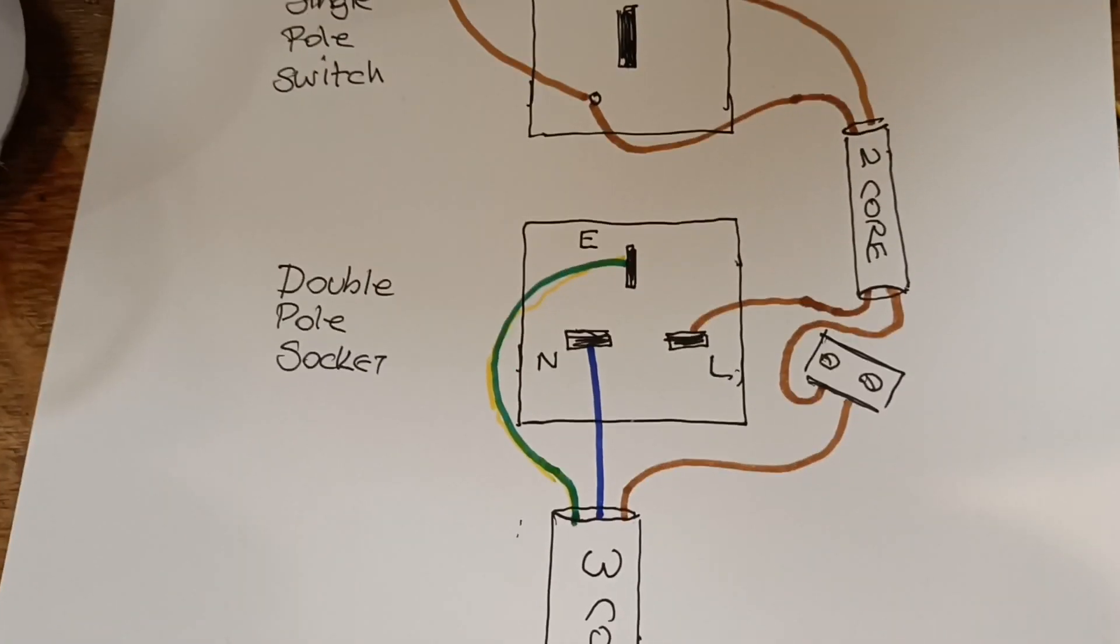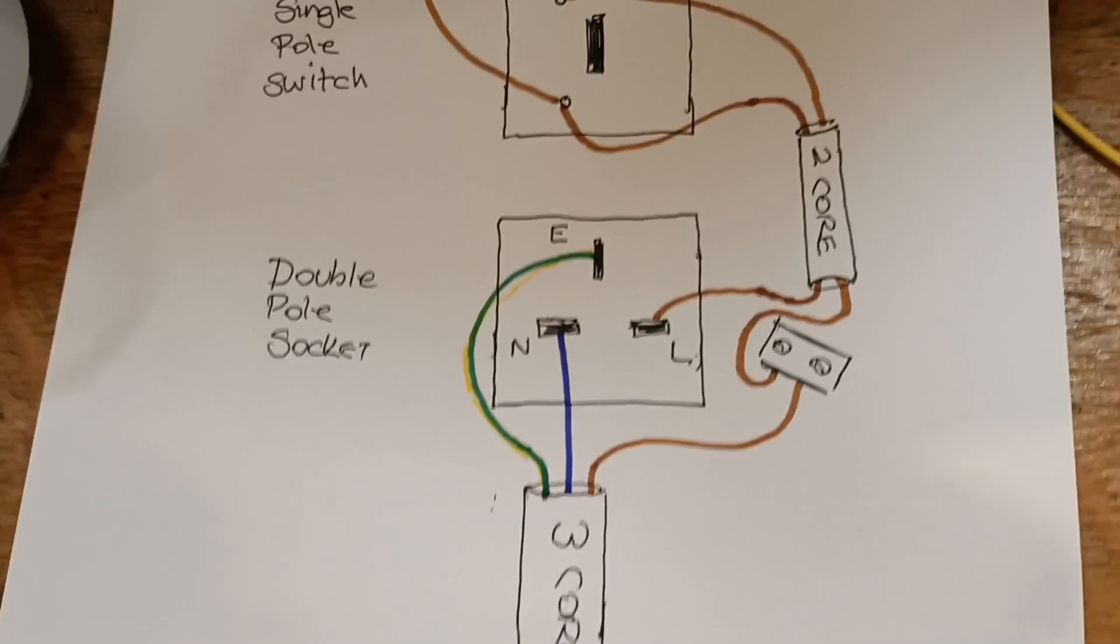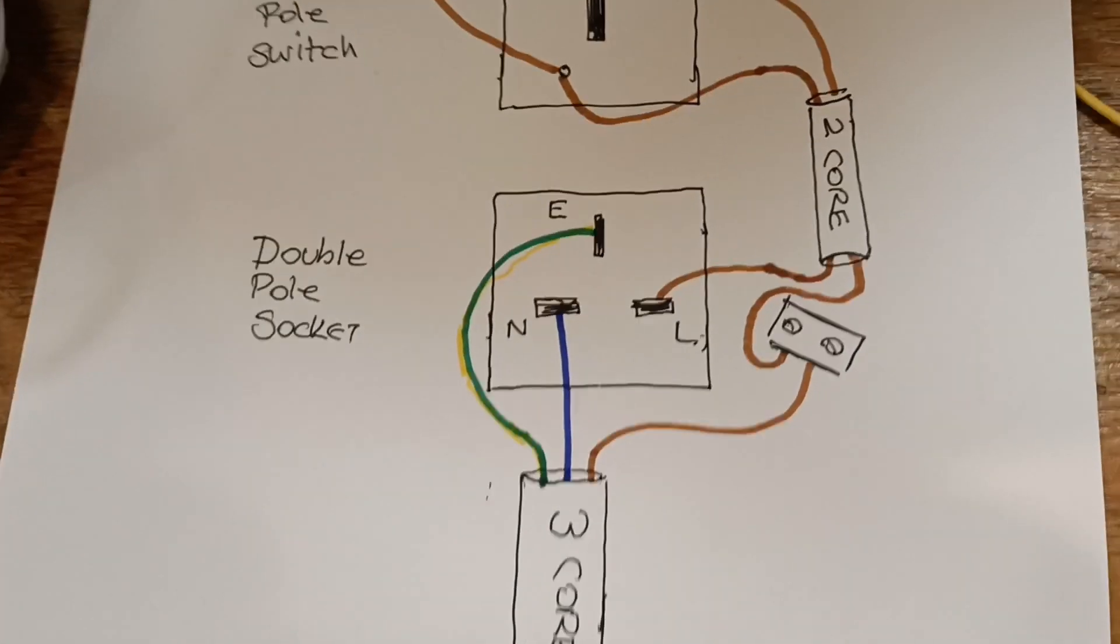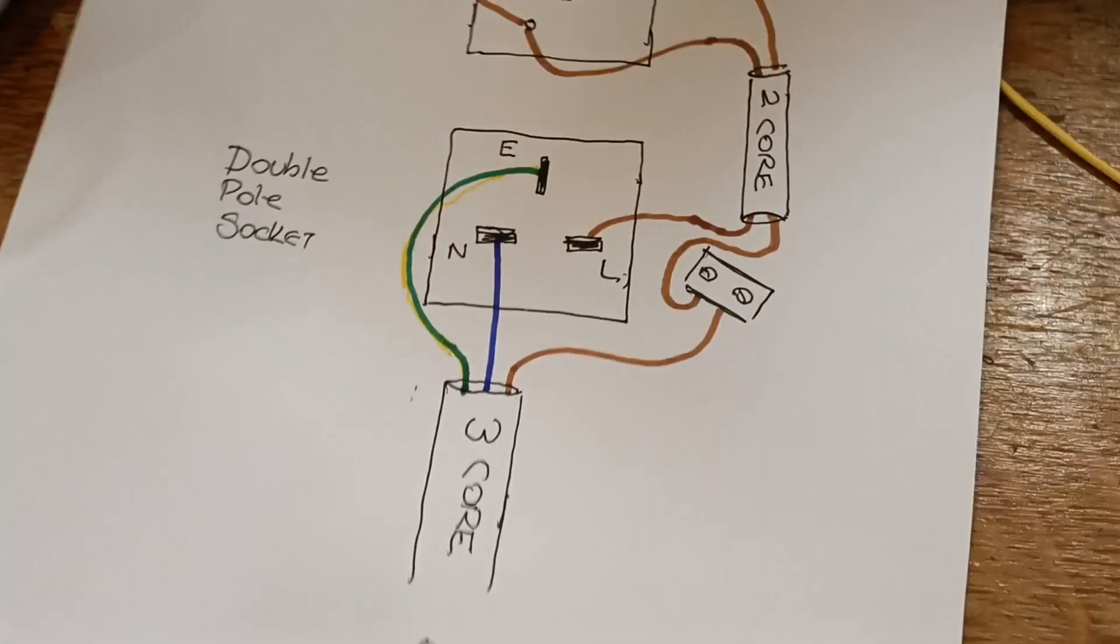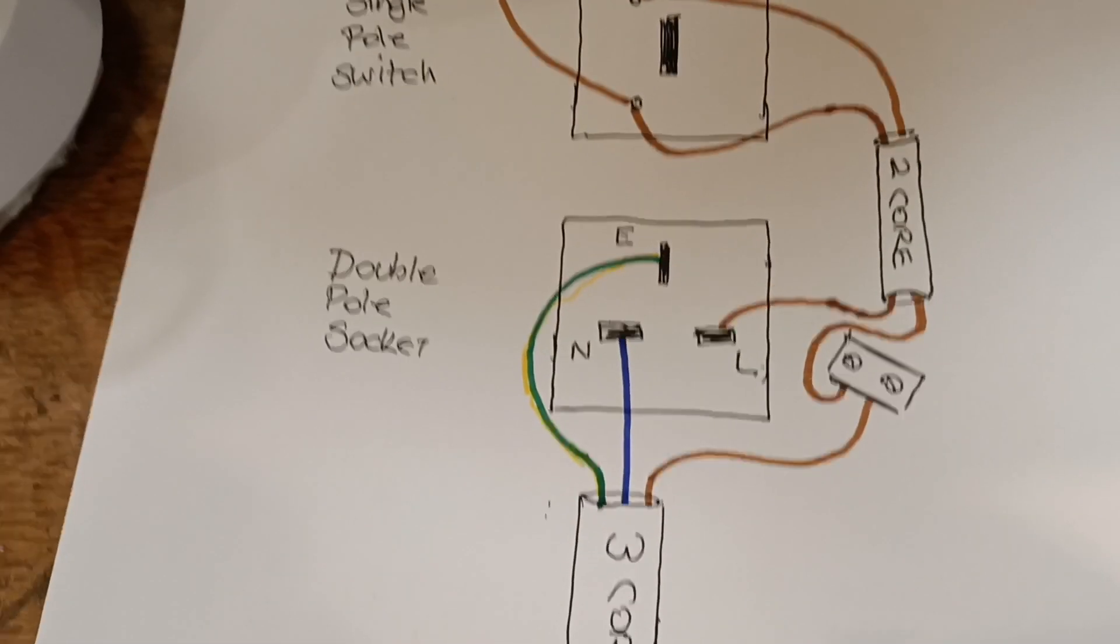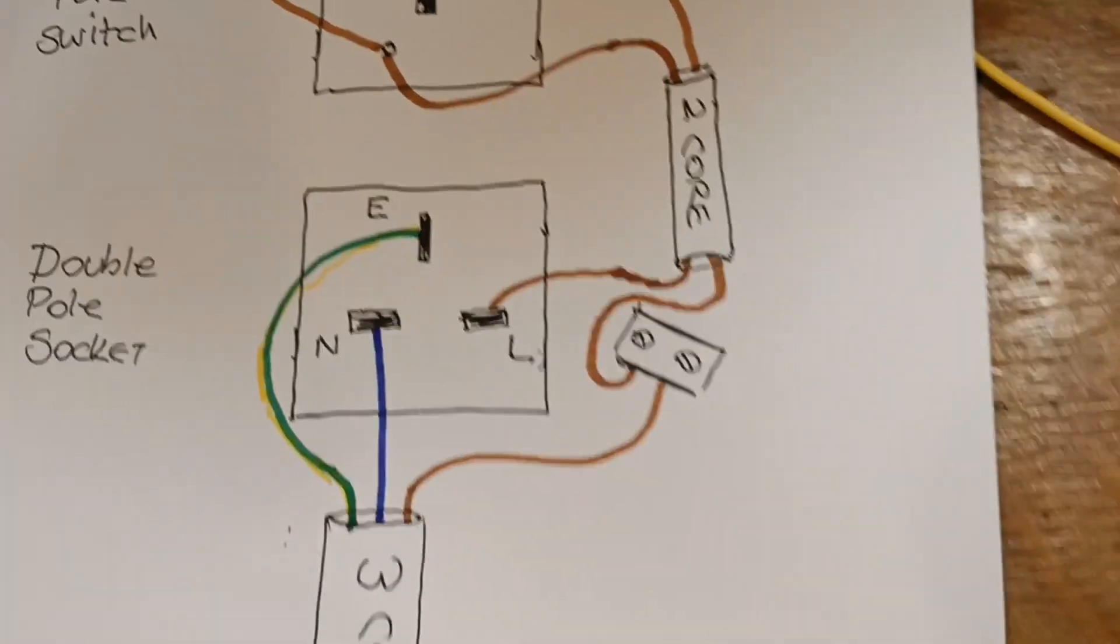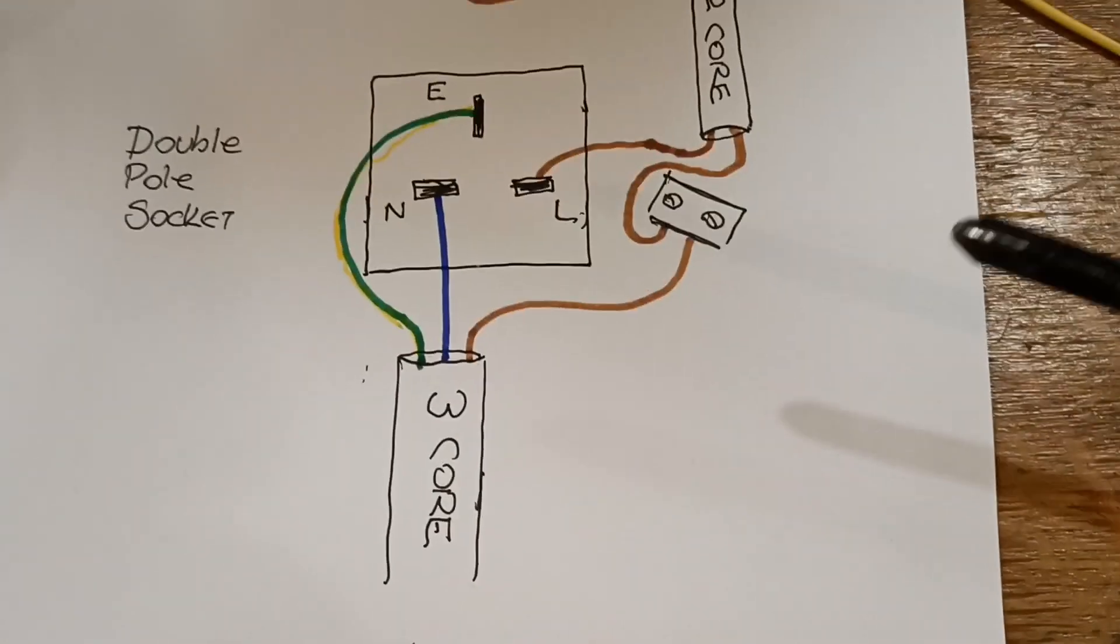On your socket, you want a double pole socket. Your neutral wire goes to the neutral terminal on the socket, and then your live or your line will go to a block, this block here.